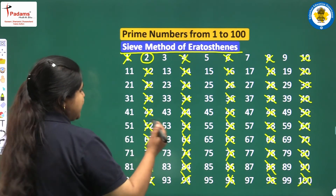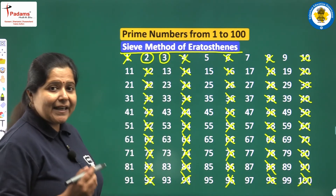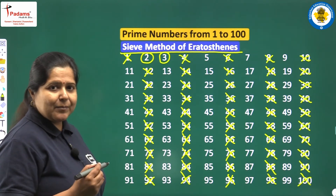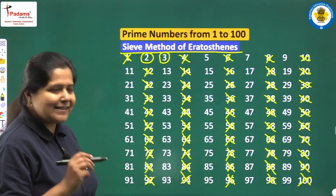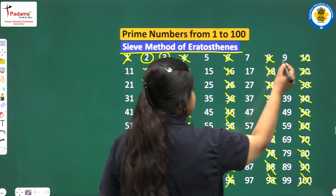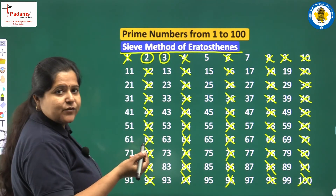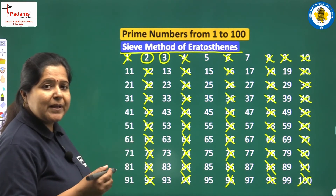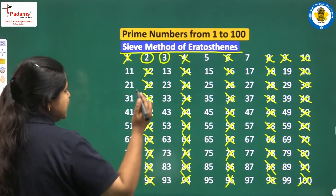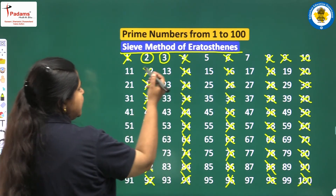Now we move on to the next number which is 3. Yes, it is a prime number. The multiples of 3 will again be composite numbers — they will not be prime. So we can cancel them. We know 3×2=6 which is already cancelled. 3×3=9 will have 3 as its factor, so it is composite. 3×4=12 is already cancelled. 3×5=15 will be cancelled. 3×6=18 is cancelled. 3×7=21 is cancelled. Then 24 is already cancelled.